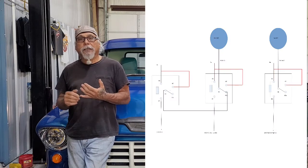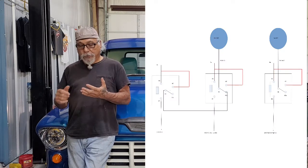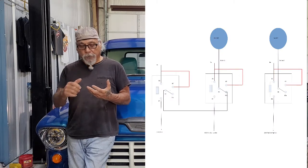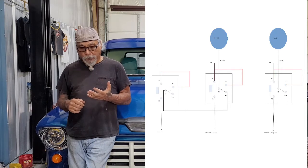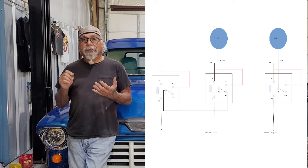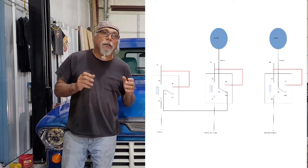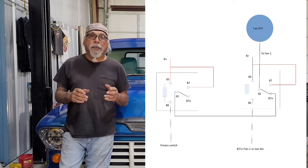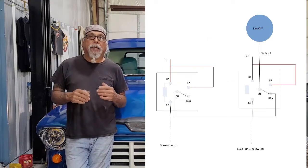So I came up with a better idea. I added a third relay, so now I have a relay for the trinary switch, a relay for fan one, and a relay for fan two. Now the trinary switch is connected to the fan one relay on pin 87A.